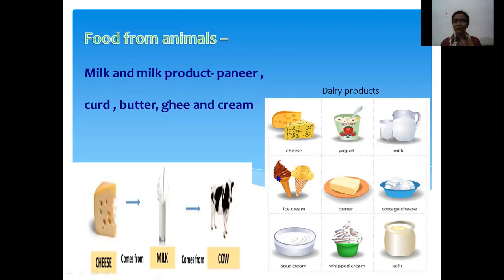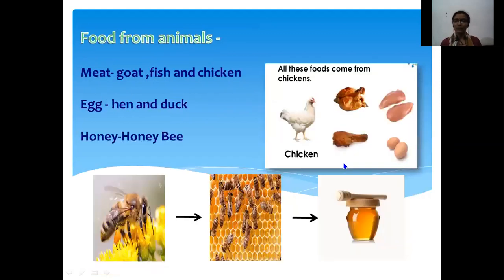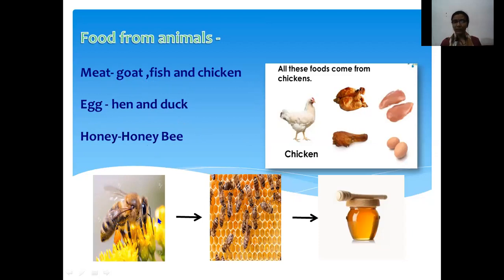These are the animal products which we eat as food. Other foods from animals include meat from goat, fish, and chicken; eggs from hen and duck; and honey from honey bees. Honey bees collect nectar — the sweet liquid inside flowers — and store it in beehives, from where we collect the honey. Honey has medicinal value and is especially used in Ayurveda.